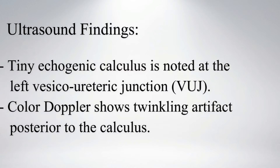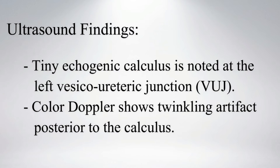On ultrasound, a fixed tiny bright echogenic calculus casting an acoustic shadow is noted at the left vesicoureteric junction. On color Doppler, a twinkling artifact is noted posterior to the calculus.